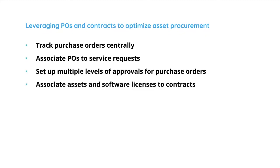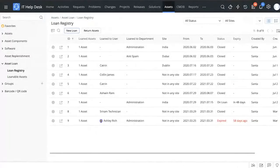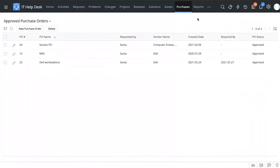With purchase orders, you can track them centrally, associate purchase orders to service requests, set up multiple levels of approval, and use contracts to associate assets and software licenses. Let's head to the Purchases tab. Here I can see a list of purchase orders — I can set the filter to show all approved purchase orders, or all purchase orders, whichever I need.